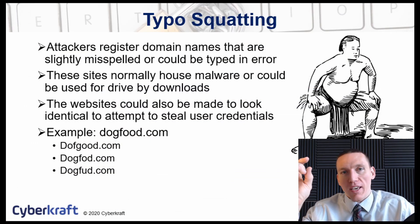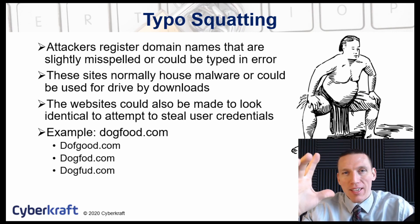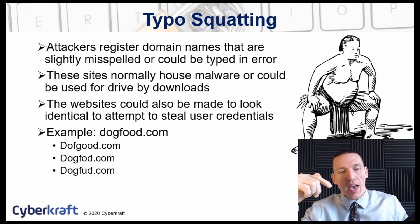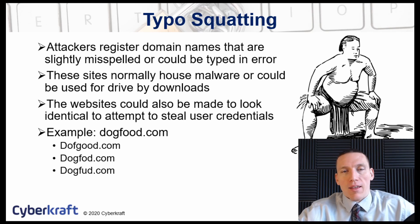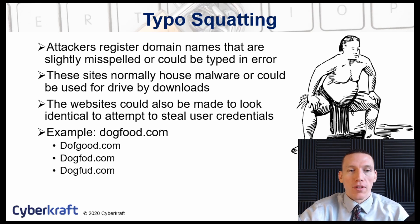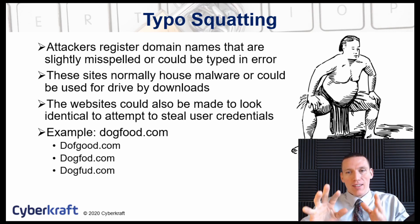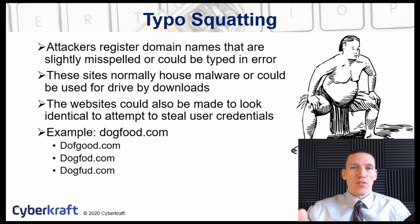Typo squatting is when an attacker maintains a website that is very similar in spelling to a real website. For example, we have dogfood.com — an online dog food store. A malicious attacker might decide to register dofgood.com or dogfood.com. These are ways in which an attacker is hoping that a real user types in and misspells 'dog food,' so when they do that, instead of going to dogfood.com, they will instead go to the attacker's site.